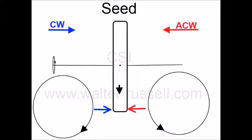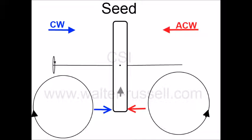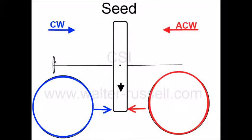Now if we orientate this loop of force so that we are viewing it head-on — looking at the left side and the right side equally — we can see how a clockwise motion is observed on the left side and an anti-clockwise motion is observed on the right-hand side, although the direction of the loop of force has not changed at all. In this position the indicator pens will in fact trace out a circle effectively around the rim of the loop of force itself.